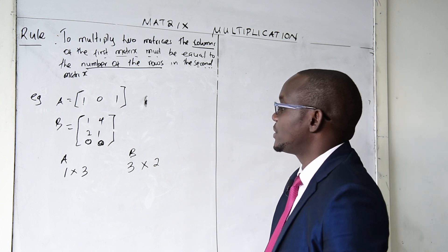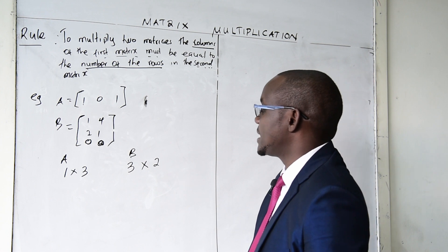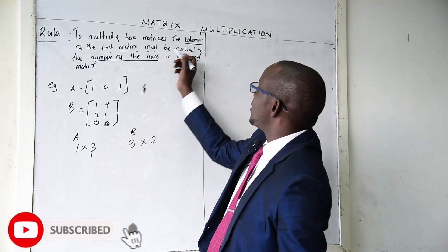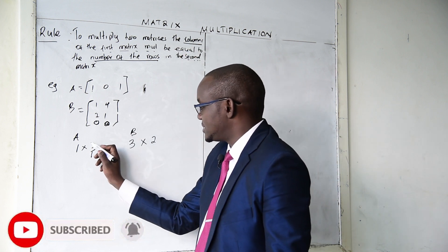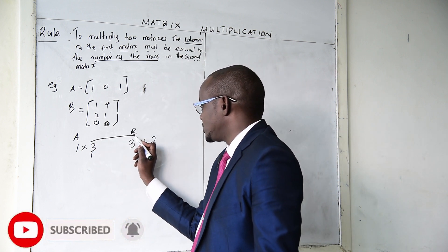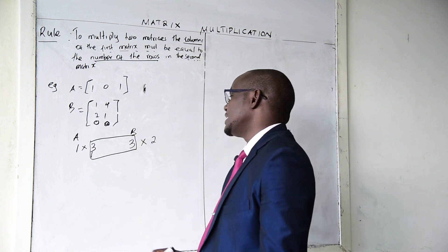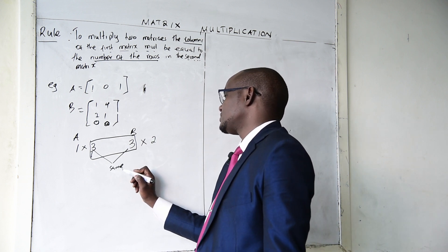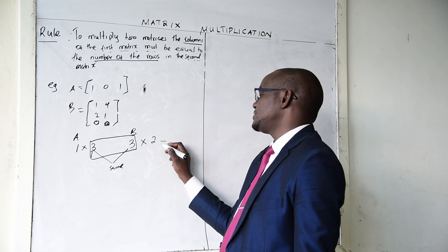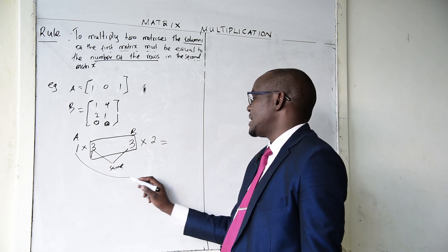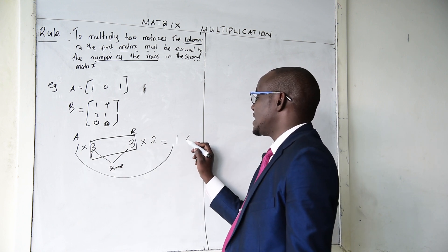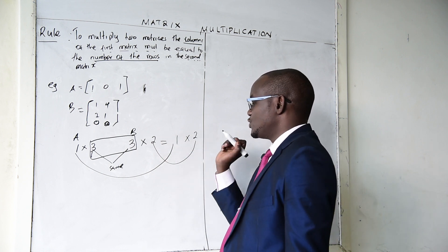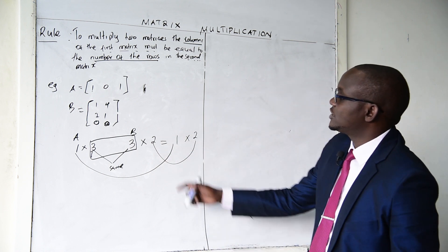To check whether they adhere to our rule, we compare the number of columns in the first matrix, which is 3, to the number of rows in the second matrix, which is also 3. These two are the same, so we can multiply. The resulting matrix will be a 1 by 2 matrix.